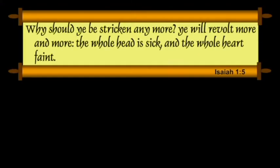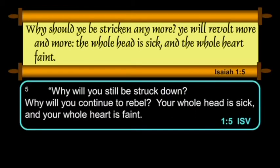The Masoretic text doesn't have the phrase "from me" in there, but this captures it pretty well. Verse 5 in King James: "Why should ye be stricken any more? Ye will revolt more and more. The whole head is sick. The whole heart faint." The ISV says: "Why will you be struck down? Will you continue to rebel? Your whole head is sick, and your whole heart is faint."